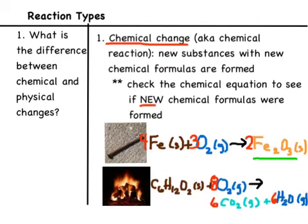Here's what you should have gotten: C₆H₁₂O₂ + 8O₂ → 6CO₂ + 6H₂O. We can see brand new products — new chemical formulas on the product side that we did not see on the reactant side. So again, that indicates a chemical change.